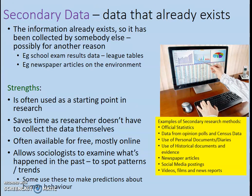Secondary data is data that already exists — it has been collected by somebody else or another organisation, possibly for another reason. One of the main sources of secondary data is the government, which collects data on a wide range of areas that sociologists make use of. For example, school exam results are a type of secondary data published in league tables, collected by schools for the government. Other examples include NHS health statistics such as causes of death and average population weight.